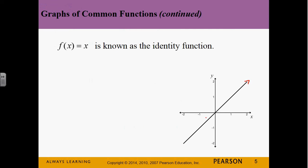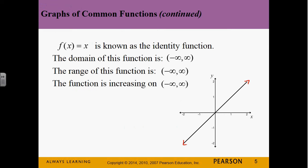Now f(x) = x — just a straight line through the origin, a perfect diagonal. The domain is negative infinity to infinity. The range is also negative infinity to positive infinity. It's increasing over the entire domain. It's an odd function because it has origin symmetry — anything positive on one side is negative on the other. Anytime we have an odd exponent, it's going to be an odd function.